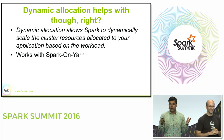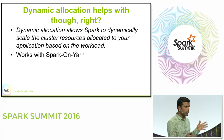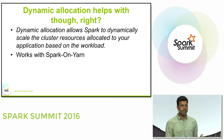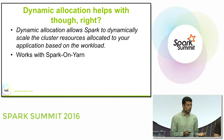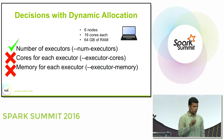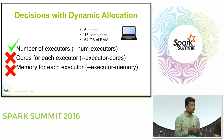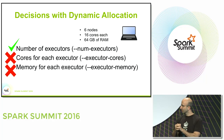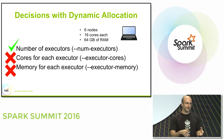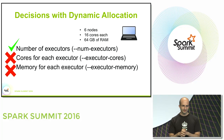One thing the Spark community is doing to address this is dynamic allocation — you can scale your cluster up and down depending on workload. It currently only works with Spark on YARN, and it helps with one of the three problems: it can dynamically determine the number of executors needed, though it can't yet help with cores or memory per executor. It also solves the problem of someone opening a Spark shell, going to lunch, and consuming half your cluster.